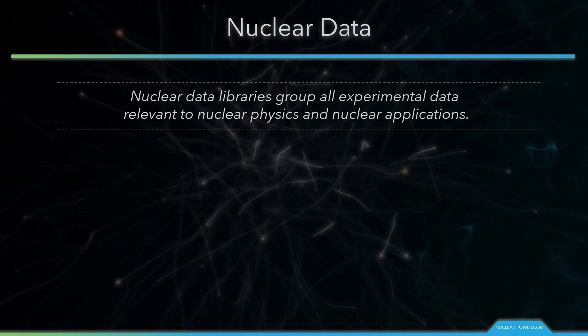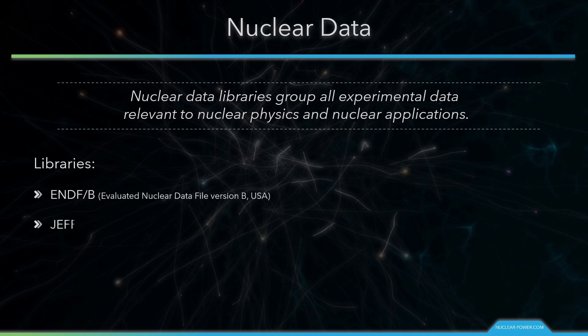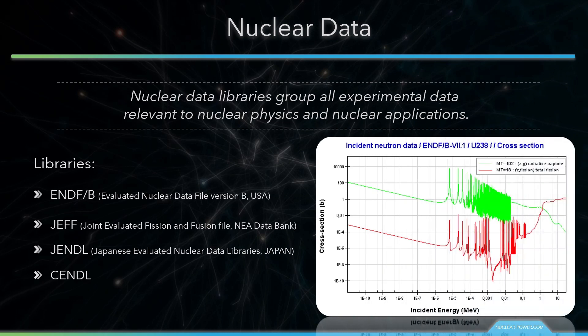Nuclear data represents measured or evaluated probabilities of various physical interactions involving the nuclei of atoms. It is used to understand the nature of such interactions by providing the fundamental input to many models and simulations. So-called nuclear data libraries group all experimental data relevant to nuclear physics and nuclear applications. It includes a large number of physical quantities like scattering and reaction cross sections, nuclear structure, and nuclear decay parameters. From these data, especially nuclear cross sections are very important. The reaction cross section is an effective area that quantifies the likelihood of certain interaction between an incident particle and a target object.